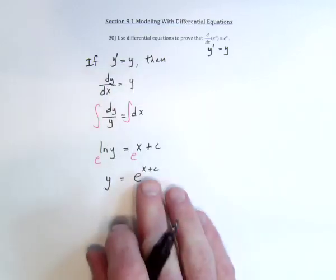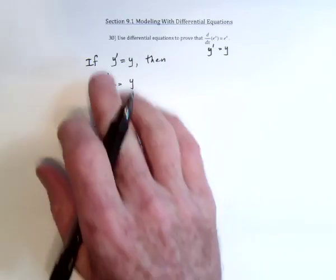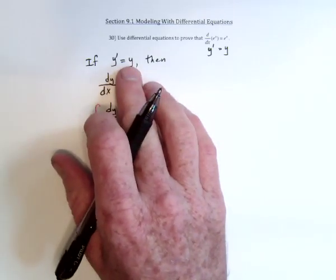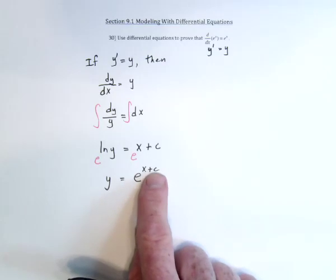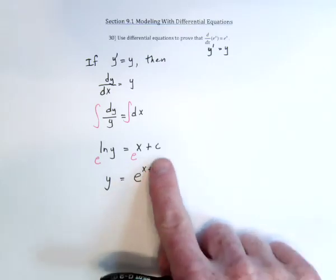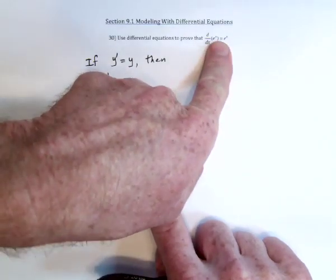So in other words, what we have is actually a more general proof that if the derivative equals itself, you're going to get the e function plus, perhaps, a constant. Now, if I just let c equal 0, then I did prove the derivative of e to the x equals e to the x.